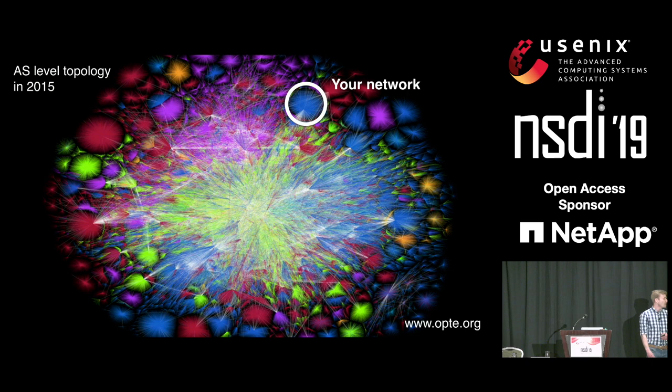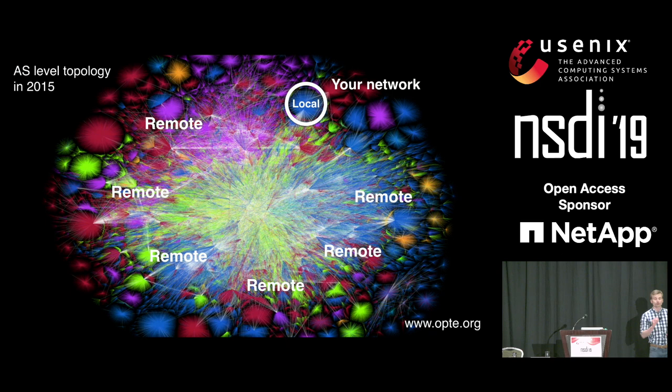If you imagine that this is your network, the first thing you can have is a failure inside your network — a local failure. But you can also have failures outside your network, in other networks that you do not control, and those failures can also affect your users' connectivity.